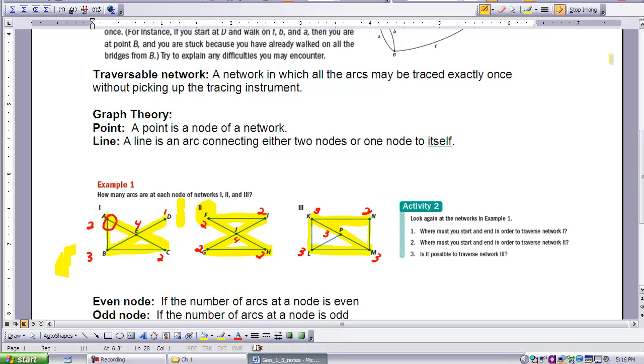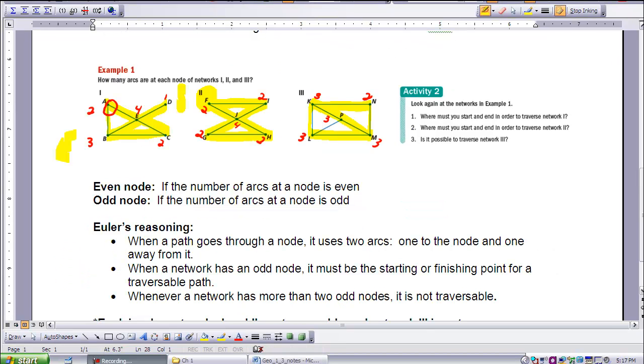Before we continue on, I want to take a look at what is an even node and an odd node. It turns out, as Euler was doing his work with networks, he came to some conclusions, and they involved an even node and an odd node. An even node is if the number of arcs at a node is even, and if it's an odd node, the number of arcs at a node is odd.